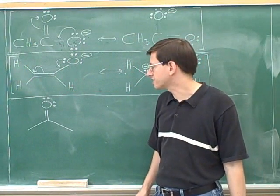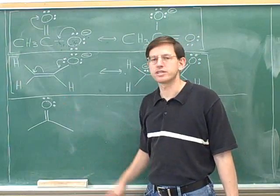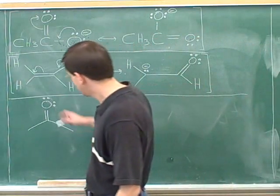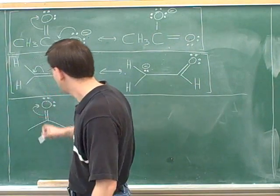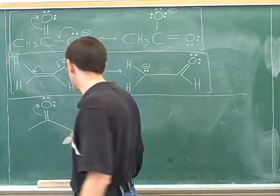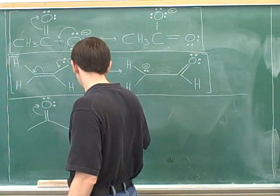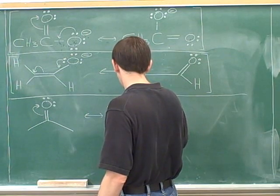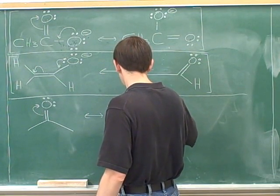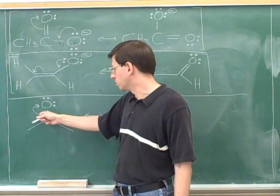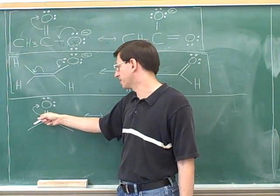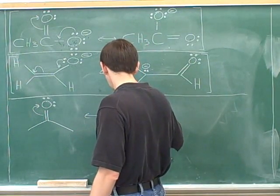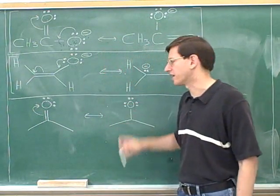Here we have a molecule of acetone. Let's try drawing another resonance structure of acetone. We'll take this pi bond and move it up onto the oxygen. So this pi bond is going to disappear, and instead we're going to take those two electrons and make them into a lone pair — a third lone pair on this oxygen.